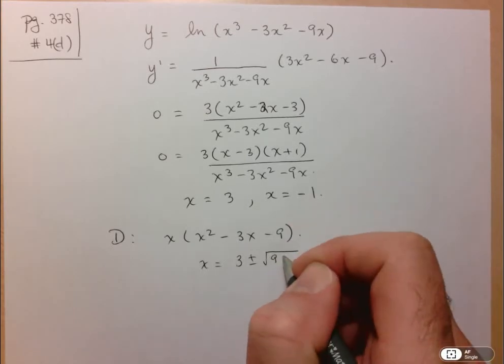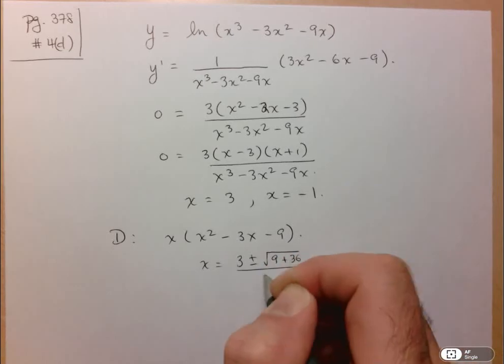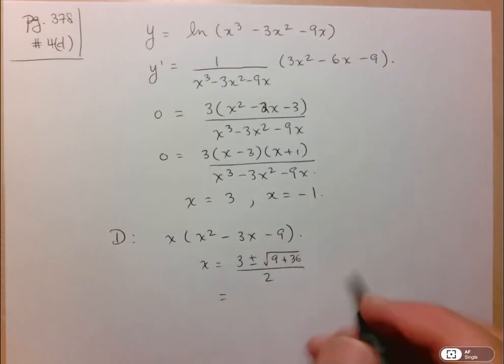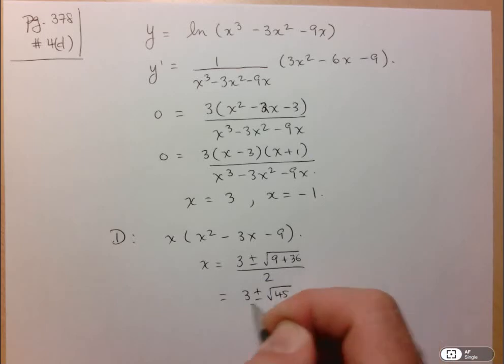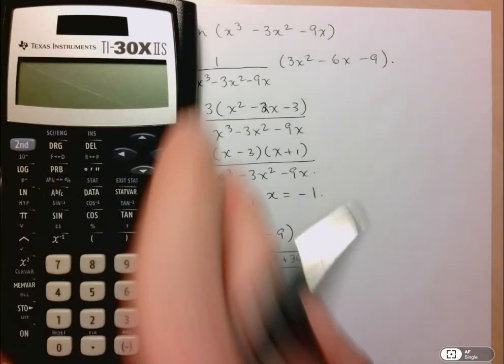Let me actually write it down. So 9 plus 36 over 2A. So here we've got 3 plus or minus square root of 45 over 2. Now let's just see what that's approximately equal to.